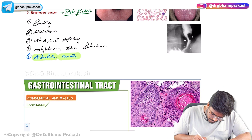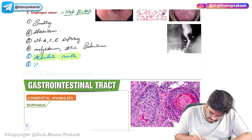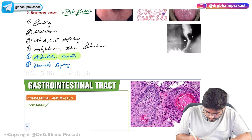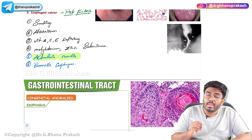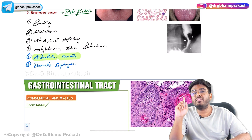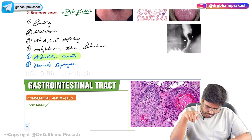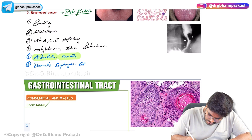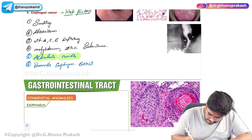Risk factor number six is Barrett's esophagus, which mainly increases the risk for adenocarcinoma of the esophagus. Risk factor number seven is GERD — gastroesophageal reflux disease.